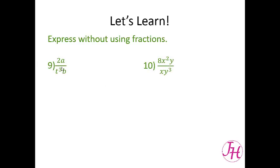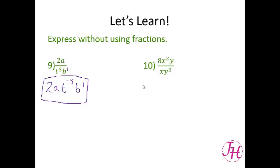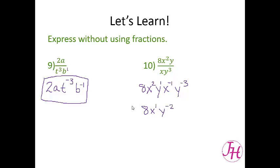Now express without using fractions — so we want to get rid of all denominators and bring everything up to the top. This 3 becomes negative, and the b has an exponent of 1, so it becomes b to the negative 1. That is all you do to write without using fractions. For the next one, 8x squared y stays where it is. To bring the x up top, it becomes x to the negative 1. To bring the y cubed up top, it becomes y to the negative 3. We can then simplify by combining like-term exponents: x squared and x to the negative 1 add to give x to the first, and y to the first times y to the negative 3 adds to give y to the negative 2. That is your answer.